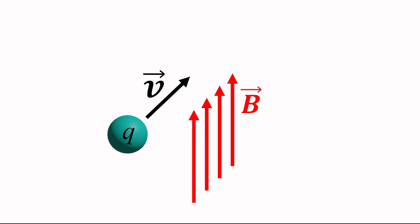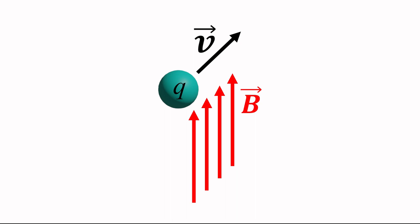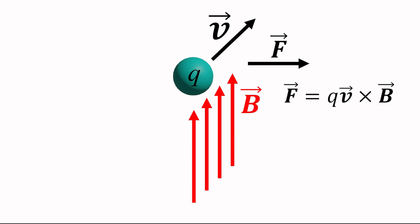We've all seen the magnetic force in action just about every day, but what exactly is it? Like the force due to an electric field, the magnetic force also works on electric charges, but in a different way. If a charge Q moves with a velocity V through a magnetic field defined by the magnetic flux density vector B, it experiences a force F given by the cross product of QV with B, pointing in a direction perpendicular to both the V and B vectors.